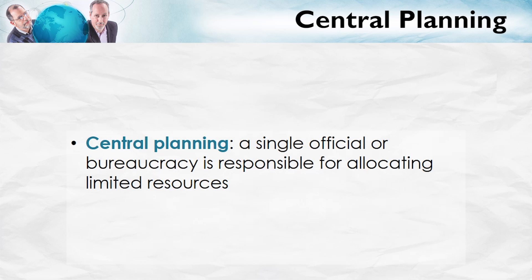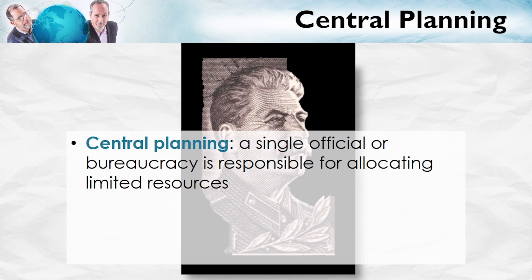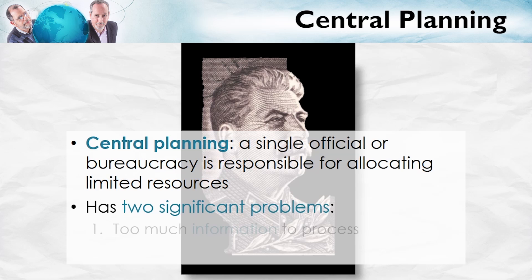One way of solving the great economic problem is through central planning — making a single official, a czar, or a bureaucracy responsible for allocating our limited resources to all the different uses. This was the approach taken in communist countries and centrally planned economies. Does it work? It's got big, big problems: problems of information and problems of incentives.